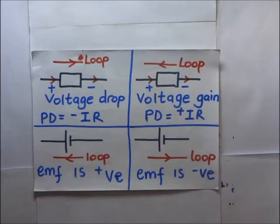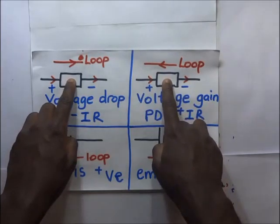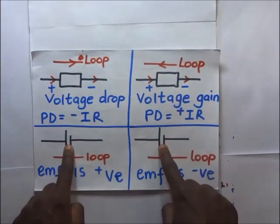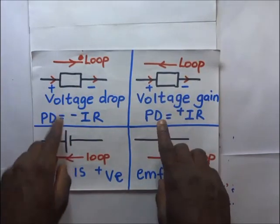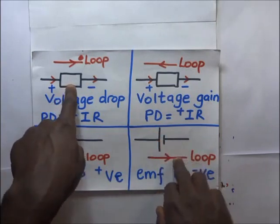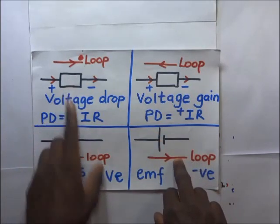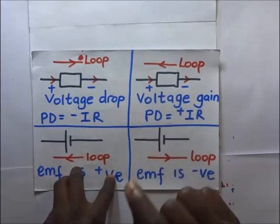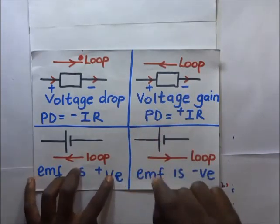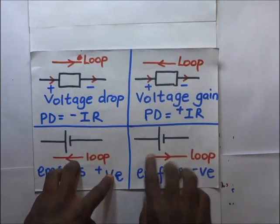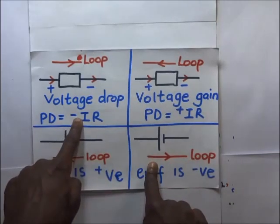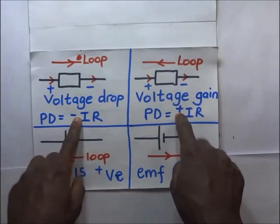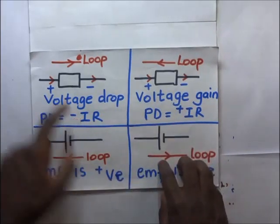Let's look at the sign convention we shall be using in our calculations in Kirchhoff's laws of electrical networks. These two are resistors and these two are sources of EMF. In our calculations we shall consider the loop — either a clockwise loop or an anti-clockwise loop — and the direction of that loop will determine how we assign the negative or positive signs on the potential drops within that loop.